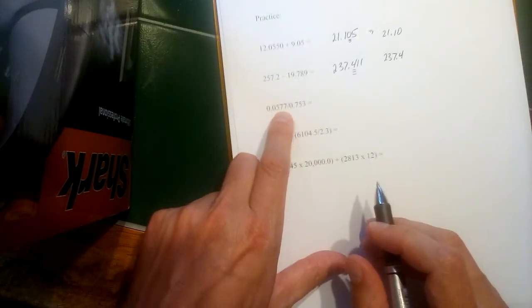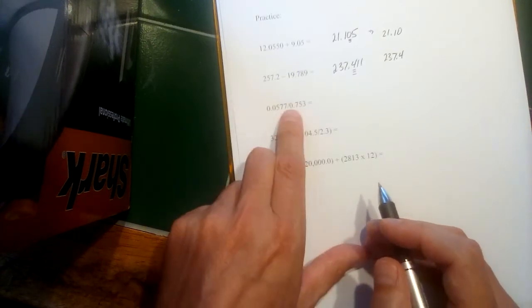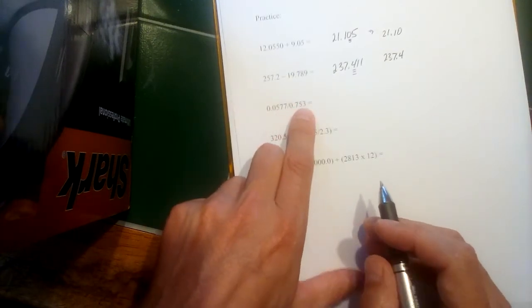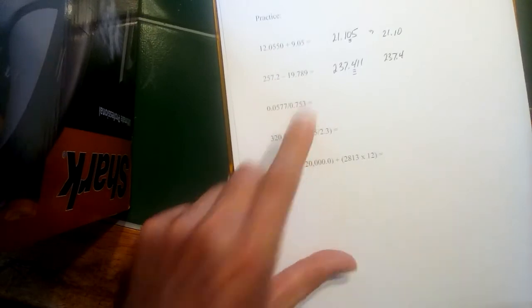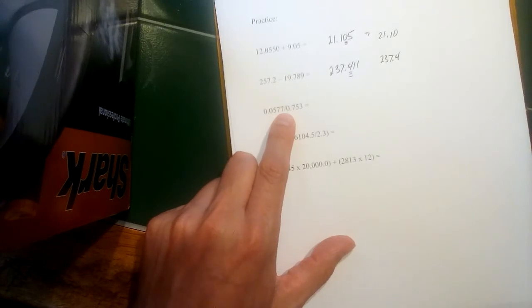0.0577. That would be three sig figs, since those zeros are to the right. 0.753. That would also be three sig figs. So this answer, after we do that division, should be three significant figures.